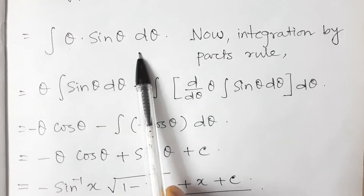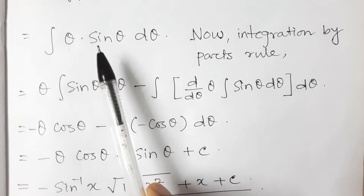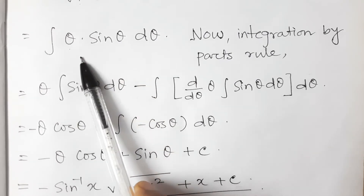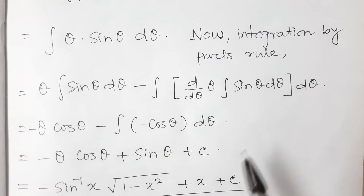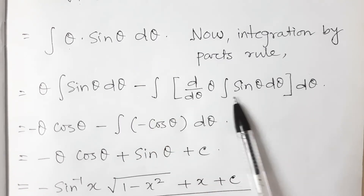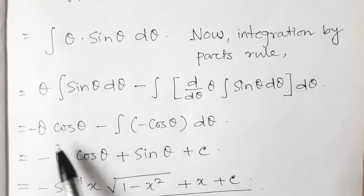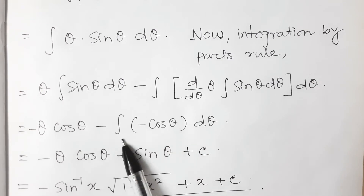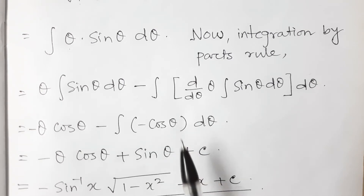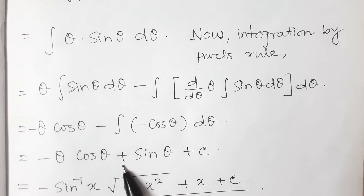In this integration, everything is in terms of θ, so we differentiate and integrate with respect to θ. The integration of sin θ is −cos θ. So this quantity gives −θ cos θ, and for the remaining integral, the integration of cos θ is sin θ. The two negatives combine to give a positive.